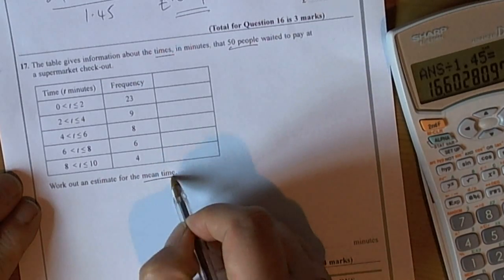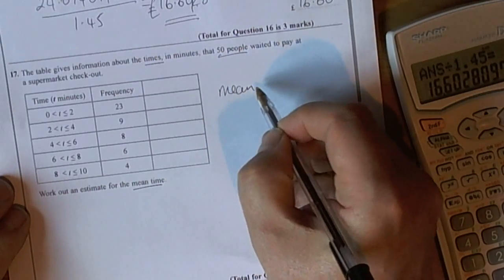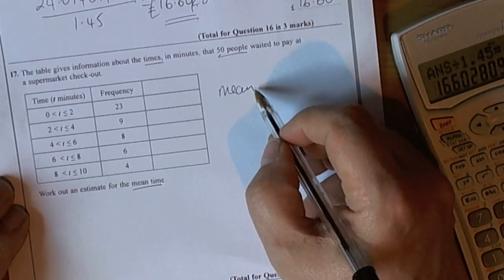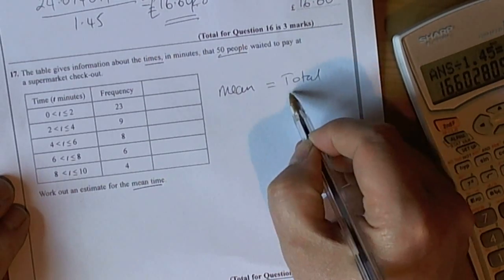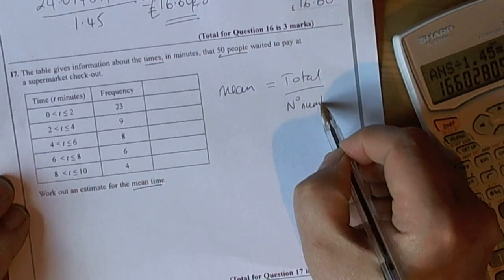It wants to work out an estimate for the mean time. We have to remember that the mean average is the total divided by the number of numbers that gave that total.